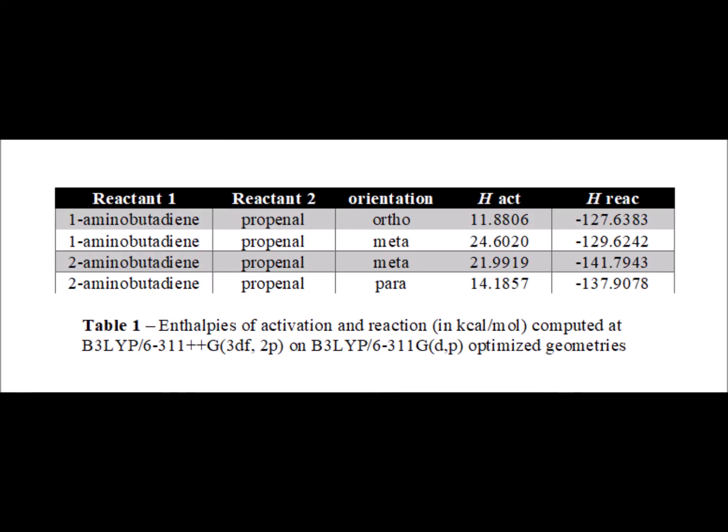Here again is Table 1. The last two reactions are described on lines 3 and 4, and we see that we have either a meta or a para orientation. The energy of activation for the para orientation is substantially smaller than for the meta, showing that para is favored over meta in this case. As a result, we suspect a general rule for Diels-Alder reactions: ortho and para orientations will be favored and meta orientations will be less favored. There doesn't seem to be much difference in the overall enthalpy of reaction, but the energy of activation is substantially different. Thank you very much for your kind attention.